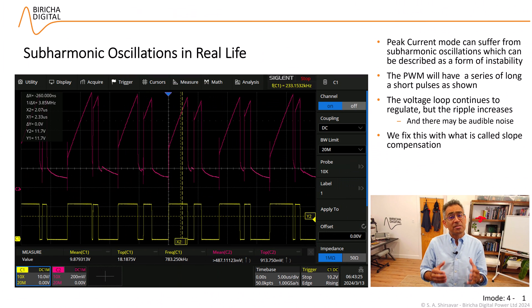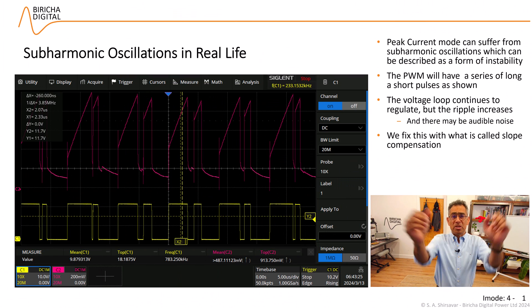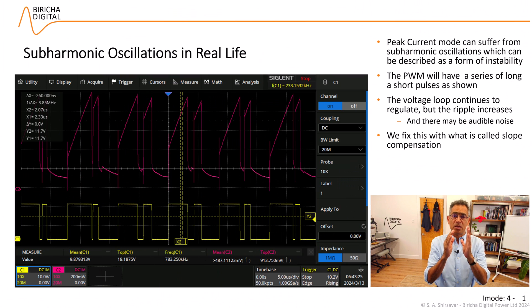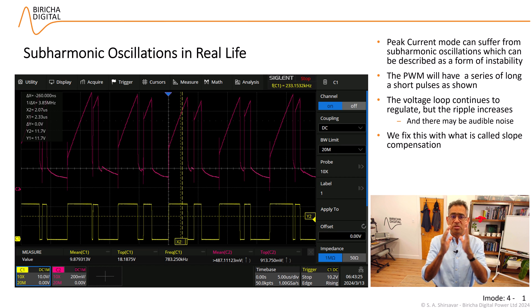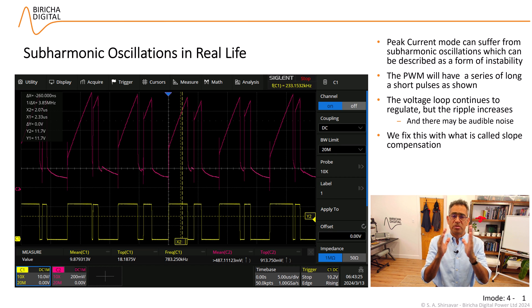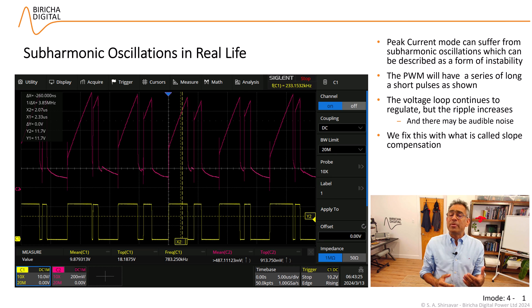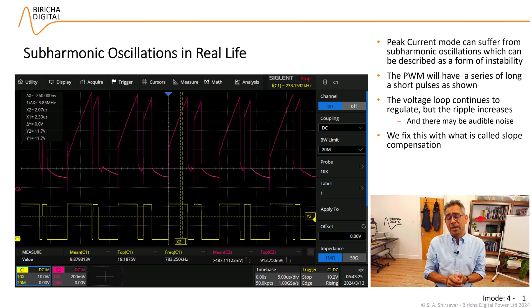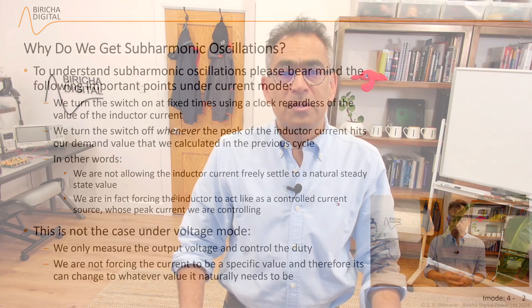It's a very characteristic look whereby your PWM is doing thick pulse, thin pulse, thick pulse, thin pulse. And what will happen is that the ripple current will increase very much and the transient response becomes really poor.